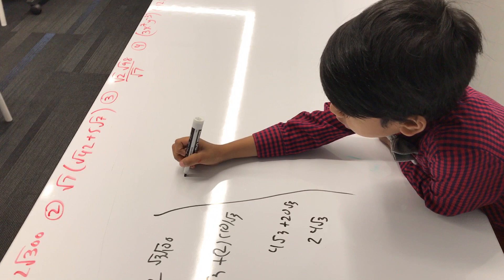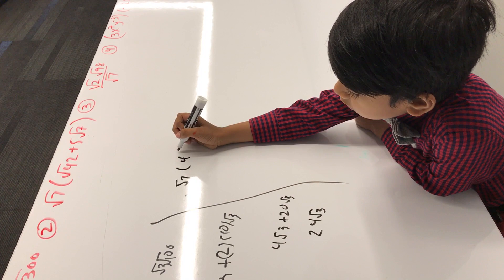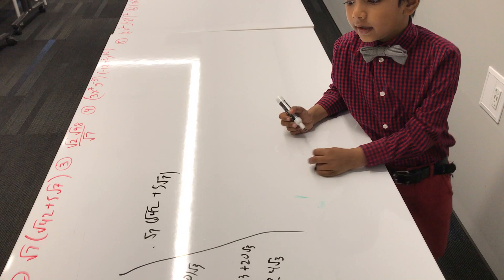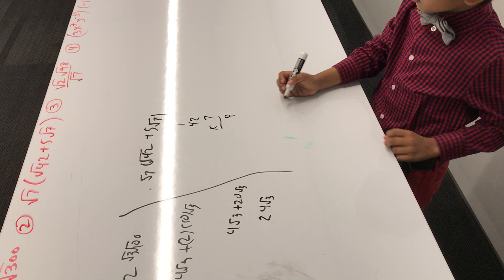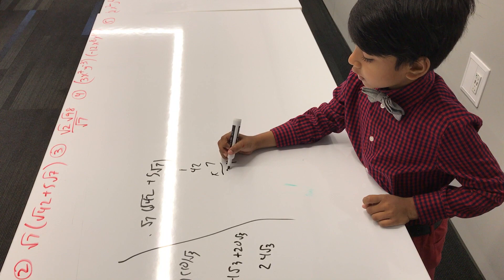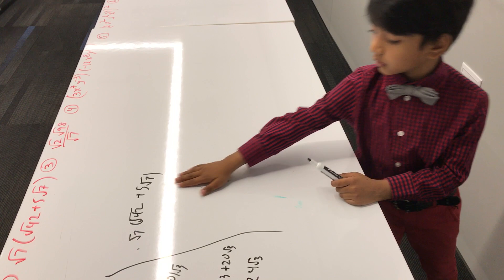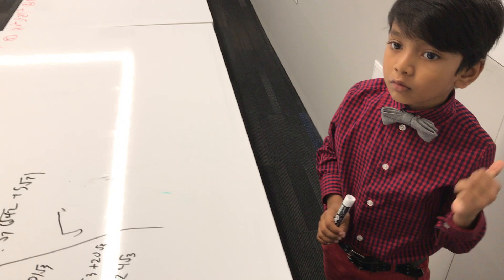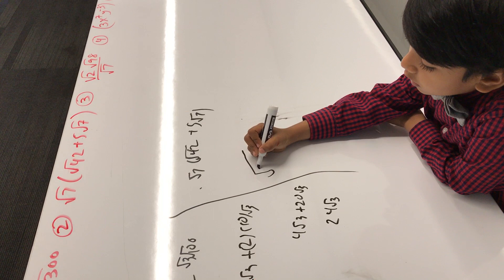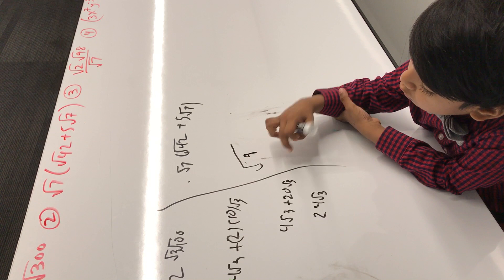Number 2: √7 times √42 plus 5√7. If you need help to calculate 42 and 7 — so 7 times 2 is 14, and 7 times 4 is 28, plus 1 more is 29. So it's 294. We got 294.